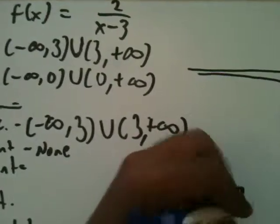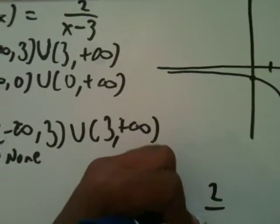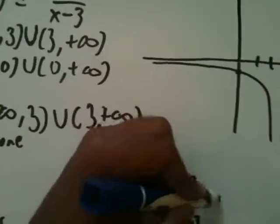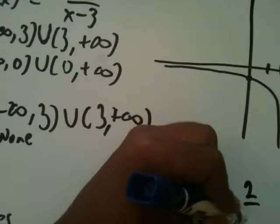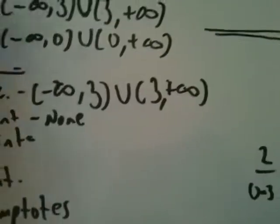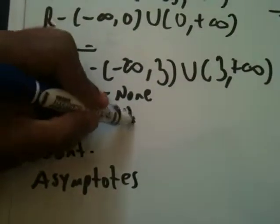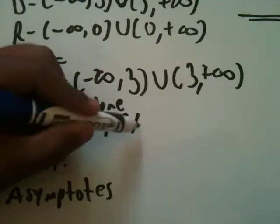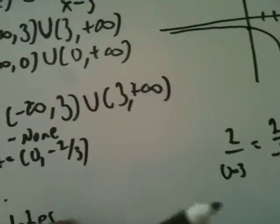Now we're trying to find our y-intercept. In other words, what do we get when x is zero? So if we plug in x equals zero, 2 over 0 minus 3 gives us 2 over negative 3. So that's going to be our y-intercept. So this is going to be (0, -2/3).